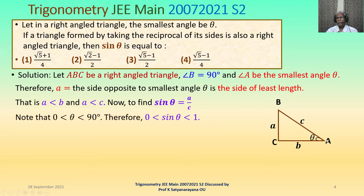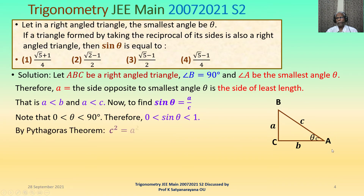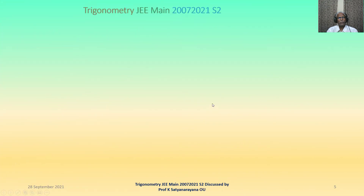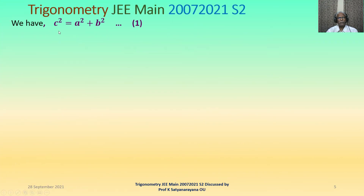Note that in this situation 0 is less than theta is less than 90 degrees. Therefore the sine theta value will lie strictly between 0 and 1, that is 0 less than sin theta less than 1. We apply the Pythagorean theorem: hypotenuse squared equals the sum of the squares of the other two sides, that is c squared equals a squared plus b squared. Let us call that equation 1.